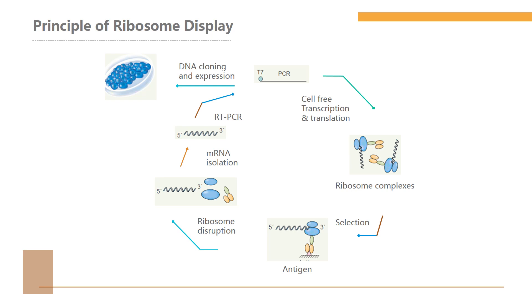Let's take a look at the principle of ribosome display. Taking antibody discovery by ribosome display as an example: a DNA cassette, typically a PCR fragment, is used that contains a promoter such as the T7 promoter and an ORF encoding a library of the protein of interest. It is transcribed in vitro, and the resulting mRNA does not contain a stop codon. Cell-free translation runs to the physical end of this mRNA, and ribosome complexes consisting of the protein of interest, the ribosome, and mRNA are formed.